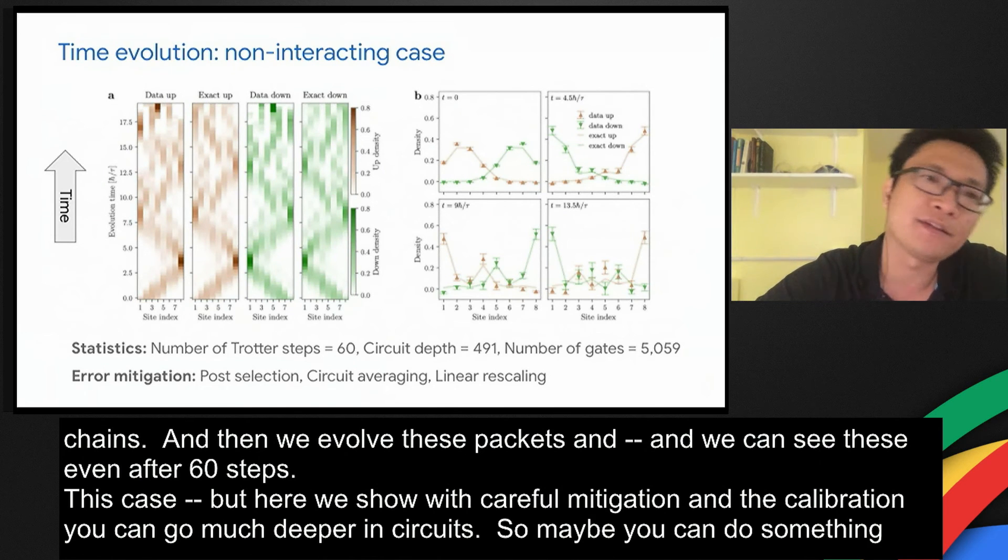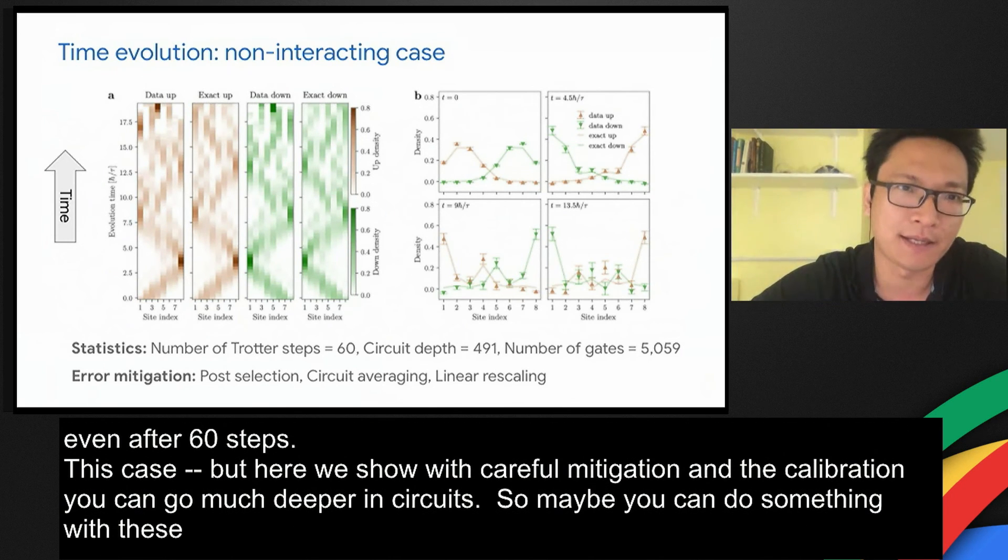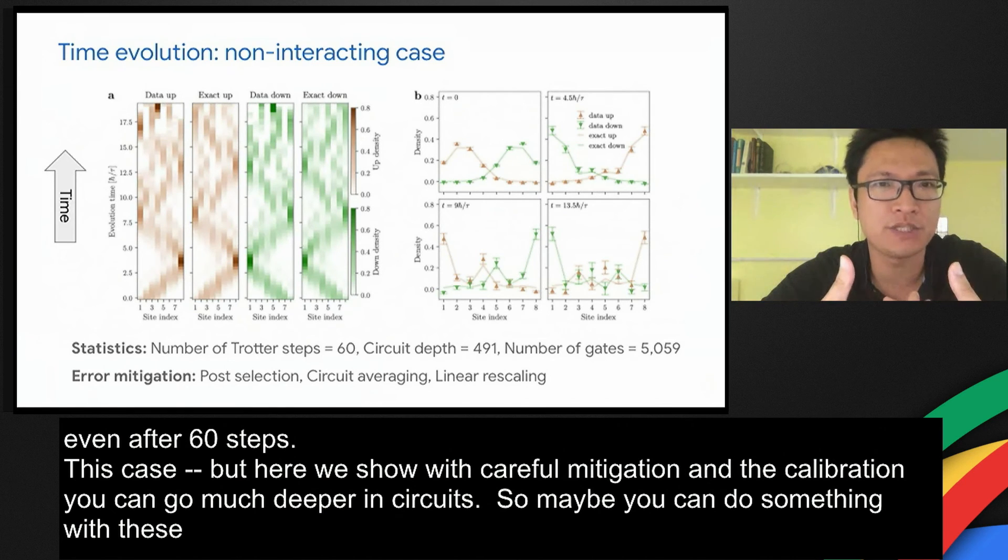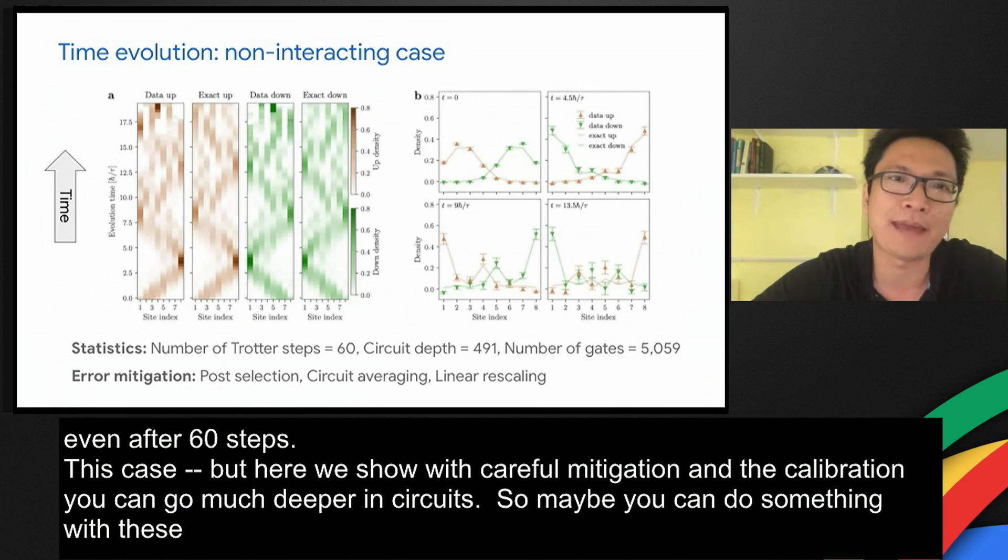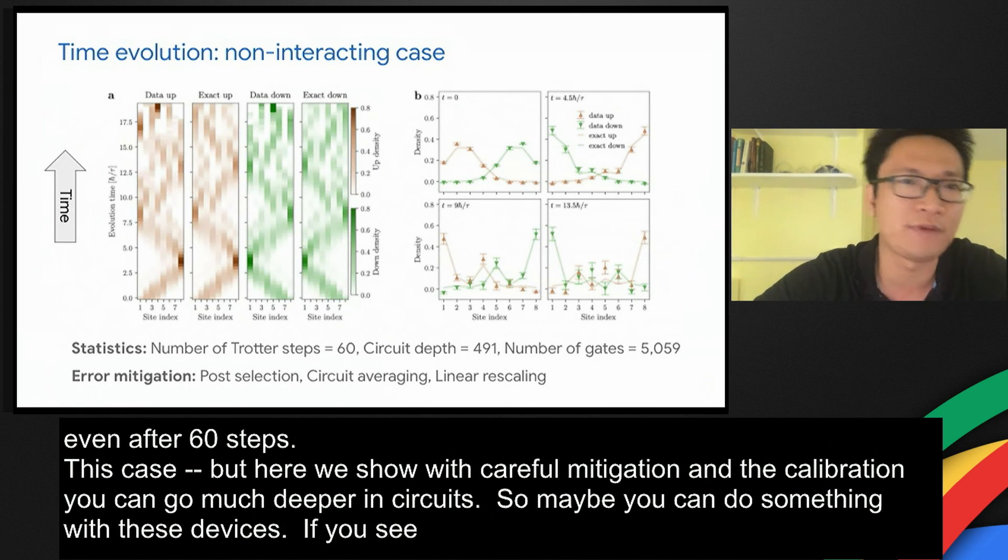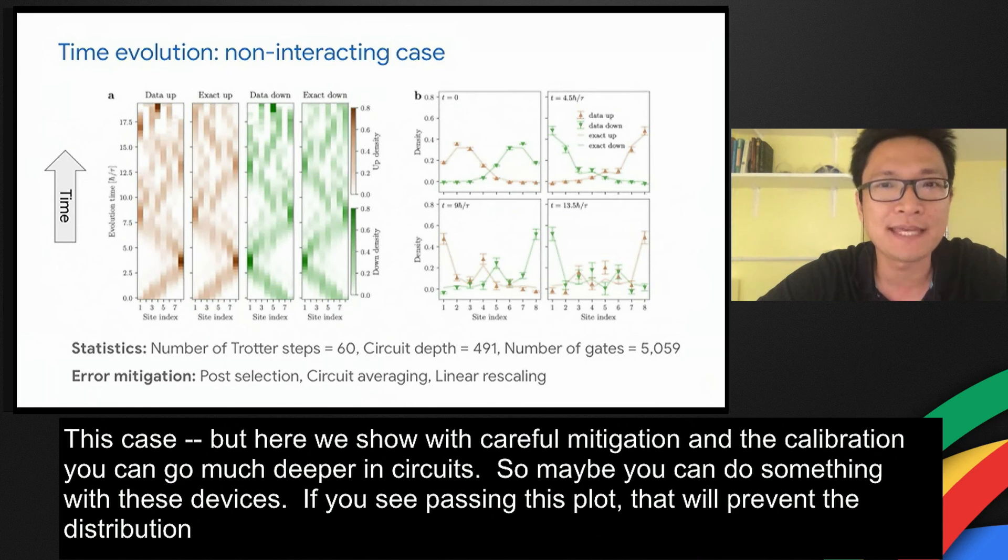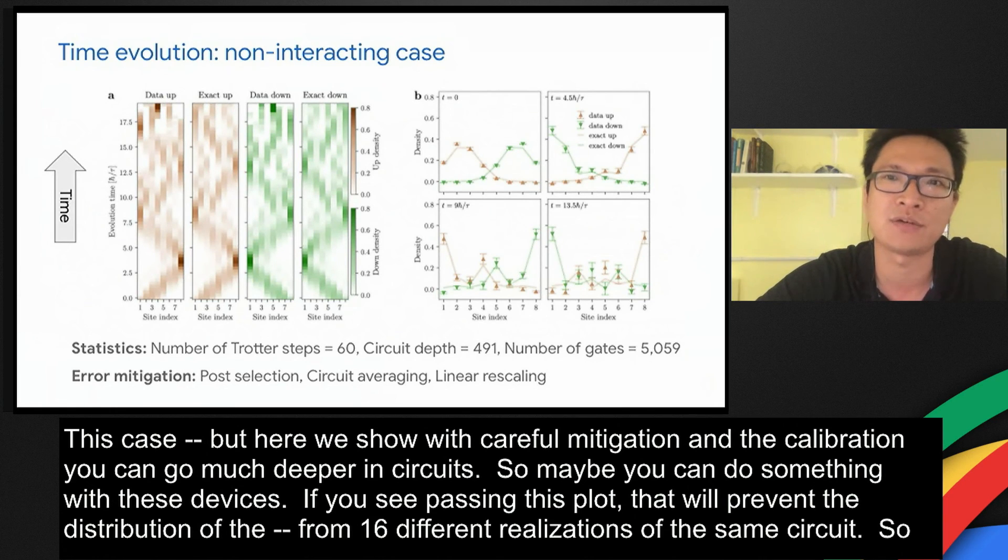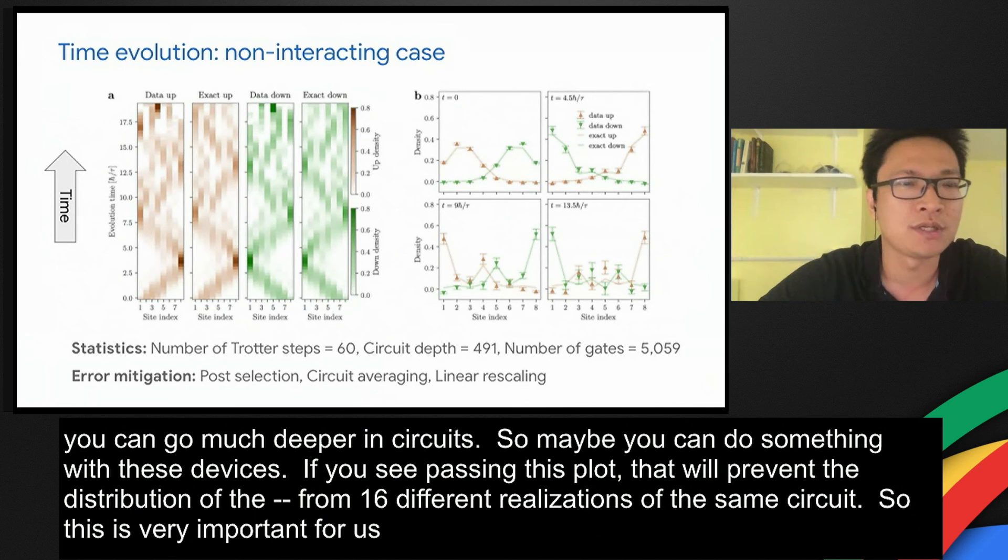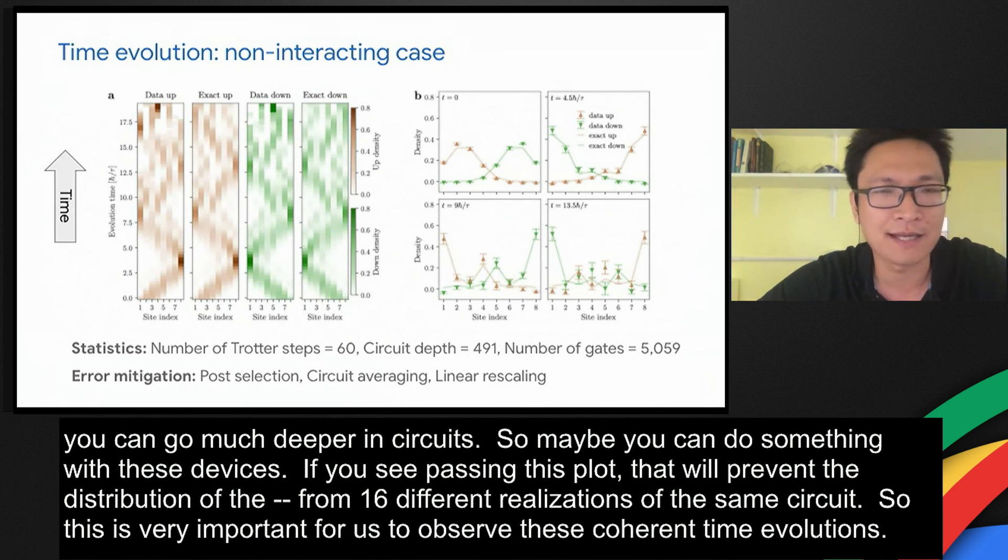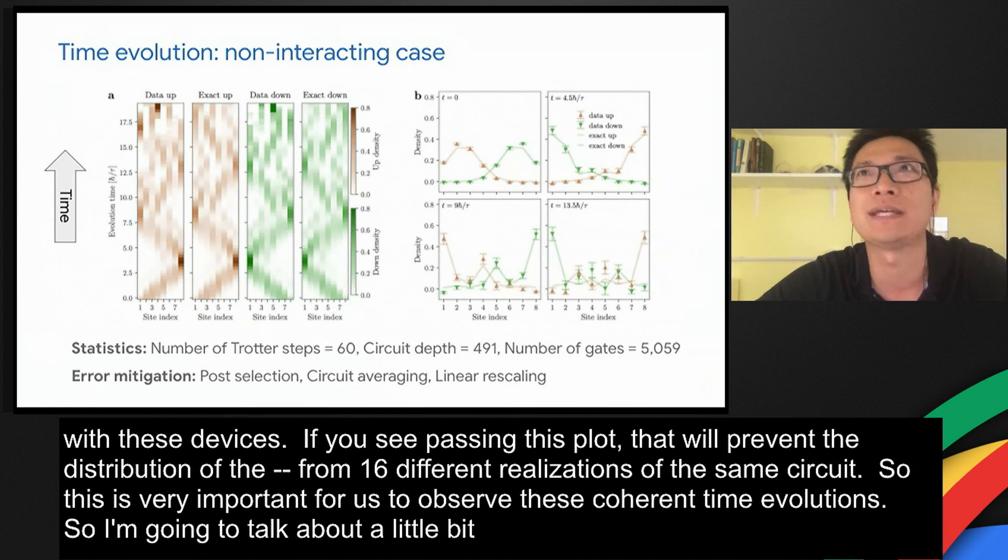In the right plot, you can see these wave packets. They cross each other and then they bounce back. And if you see these error bars in this plot, that represents the distribution of the results that we gain from 16 different realizations of the same circuit. This is very important for us to observe these coherent time evolutions. I'm going to talk a little bit about the calibration and the error mitigation scheme that we have been using.